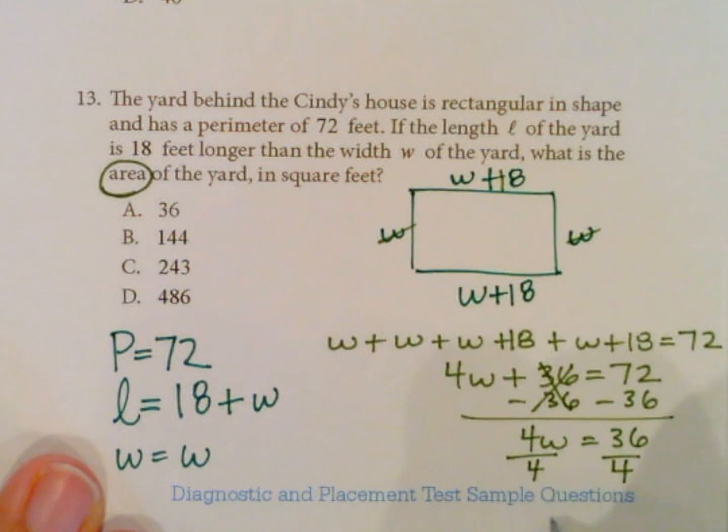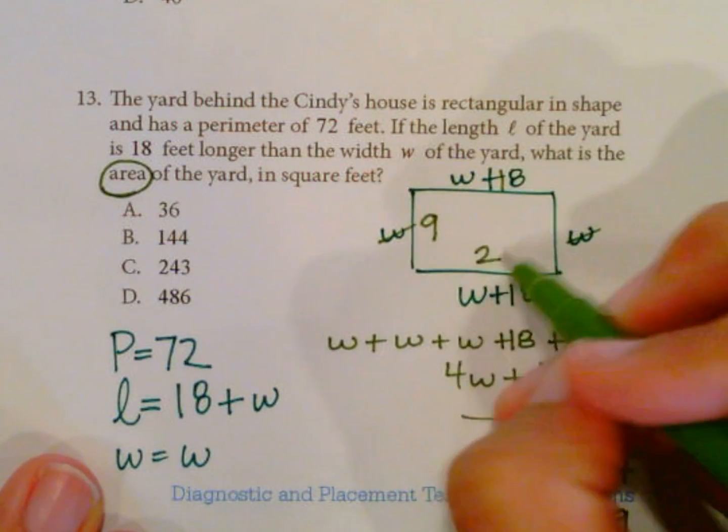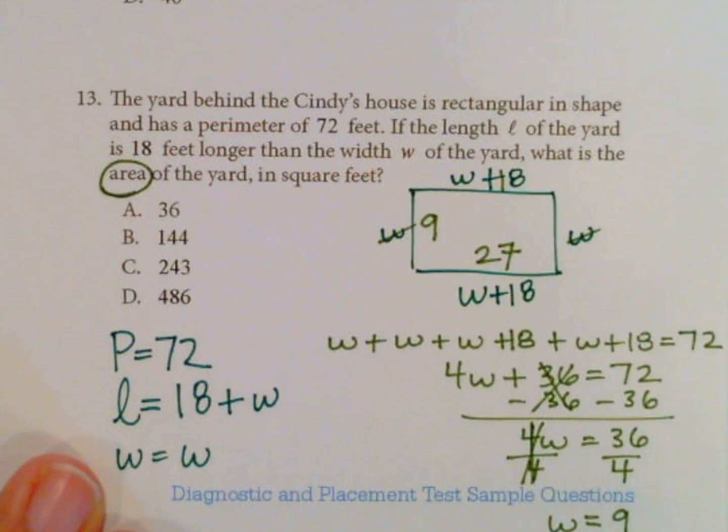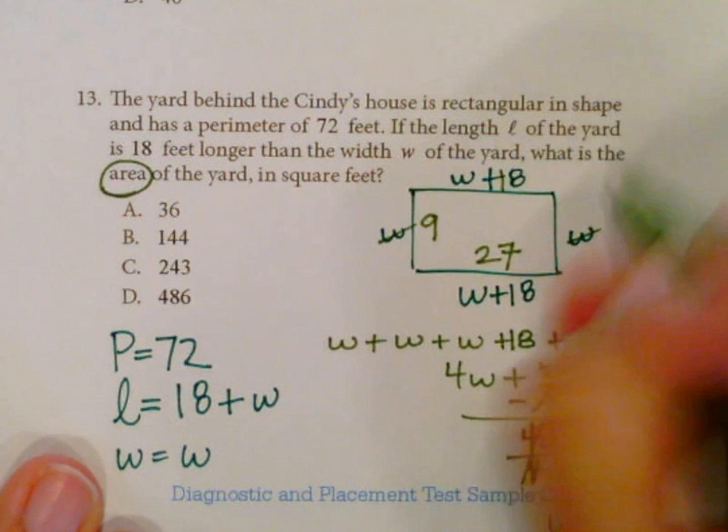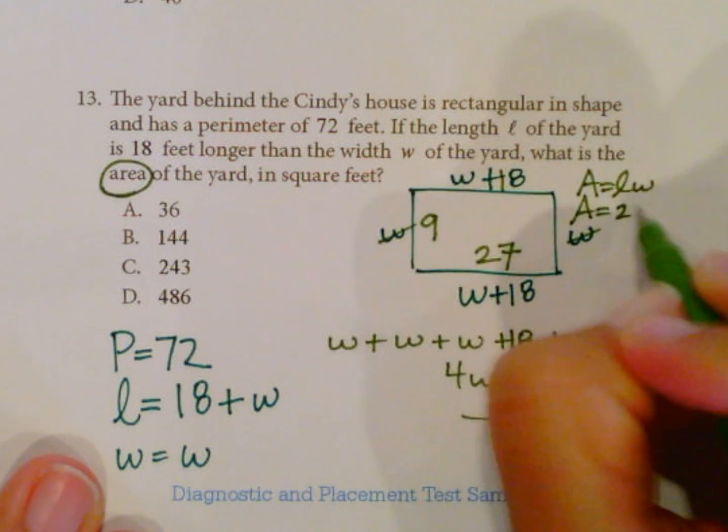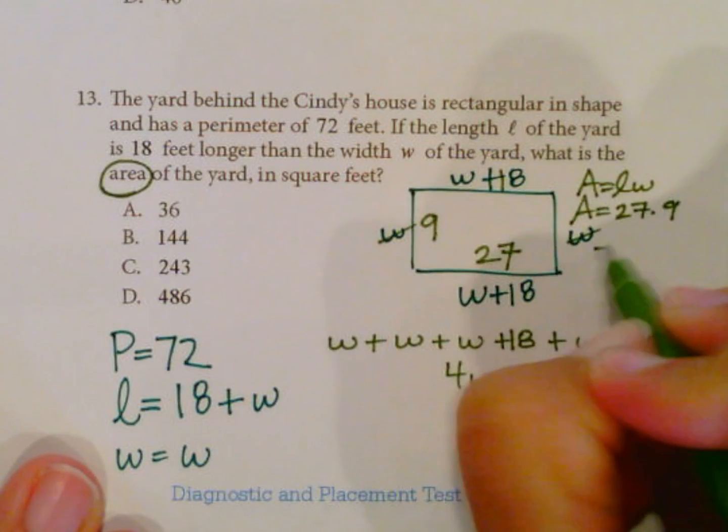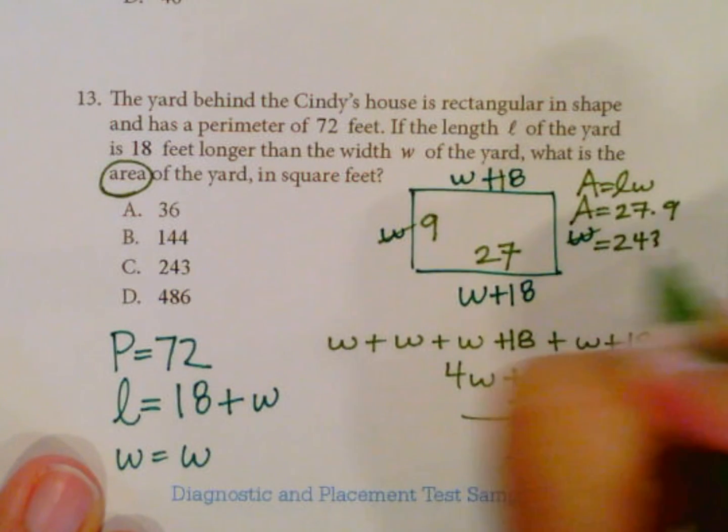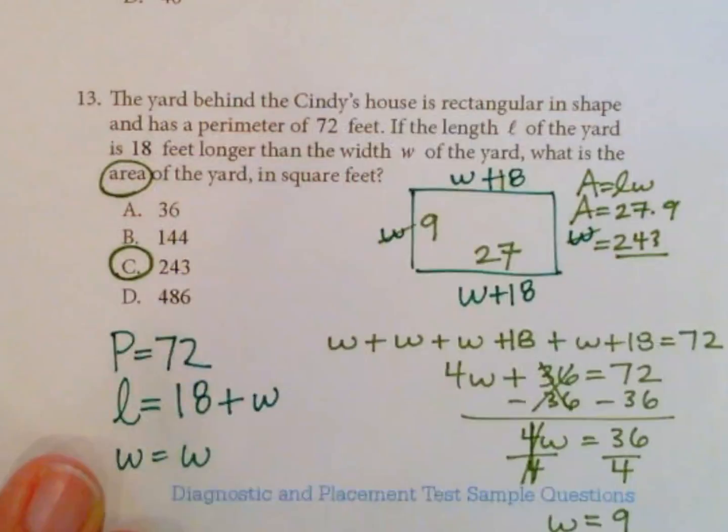Divide by 4. W equals 9. So if w is 9, then w plus 18 is going to be 27. Plugging in those values, 27 times 9 is 243. So the area is length times width, that's going to be 27 times 9, and that equals 243. Answer C.